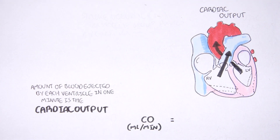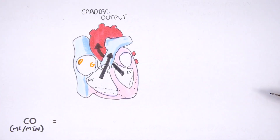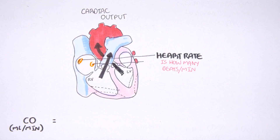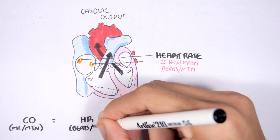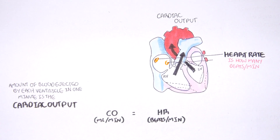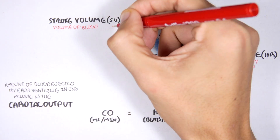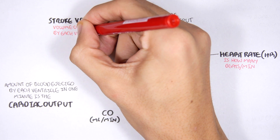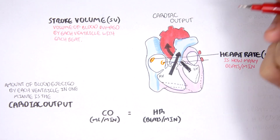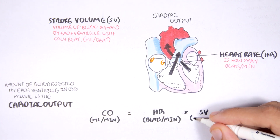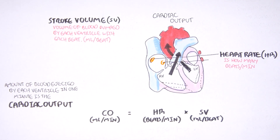Cardiac output can be calculated using two variables. The first variable is heart rate, or HR, which is the number of heartbeats in one minute. The second variable is stroke volume, or SV, which is the volume of blood pumped with each beat of the heart, measured in milliliters per beat. Cardiac output is therefore the product of HR and SV.